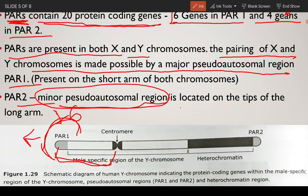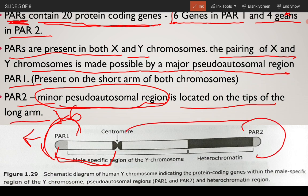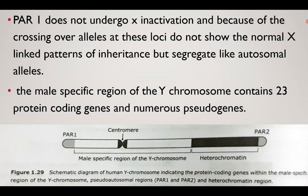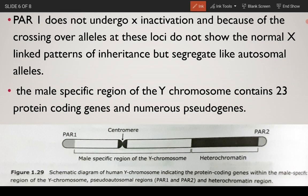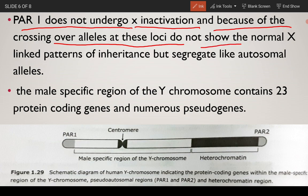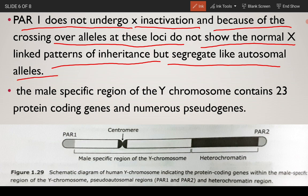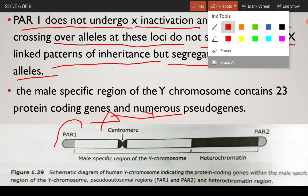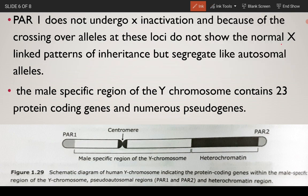PAR2 is the minor pseudo-autosomal region, located on the tips of the longer arm. PAR1 does not undergo X inactivation. Because of crossing over, alleles at PAR1 loci do not show the normal X-linked pattern of inheritance but instead segregate like autosomal alleles. The PAR1 of the X chromosome and PAR1 of the Y chromosome undergo crossing over, so they do not show X-linked inheritance patterns.